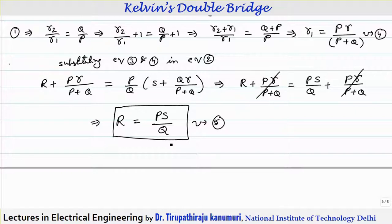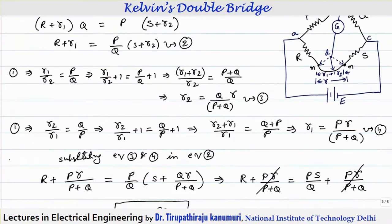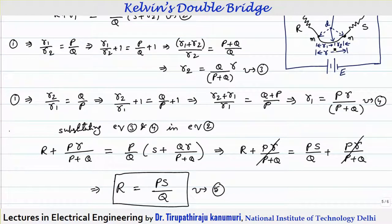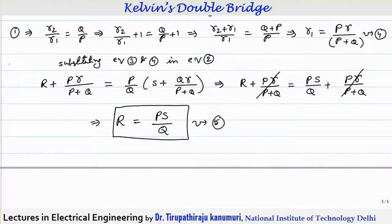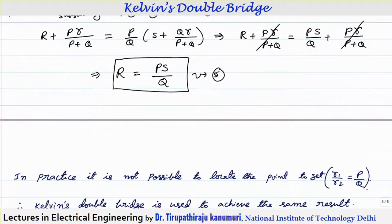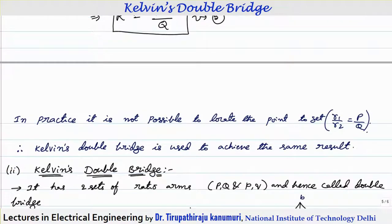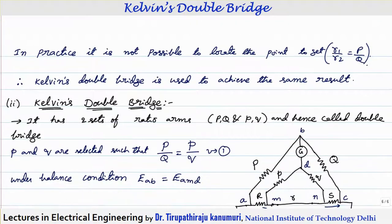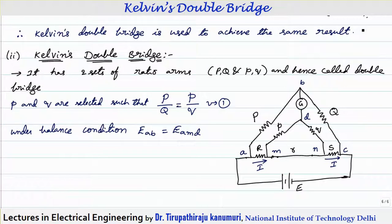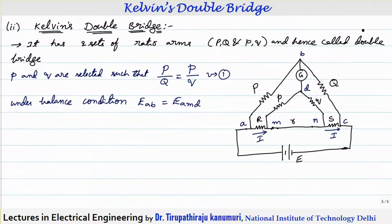We can conclude that if point D is connected such that r1/r2 = P/Q, the effect of lead resistance is neglected. However, practically locating which position to connect in between the lead is a very difficult task, because we do not know the lead resistance value either. That is why in practice, we use the Kelvin double bridge.